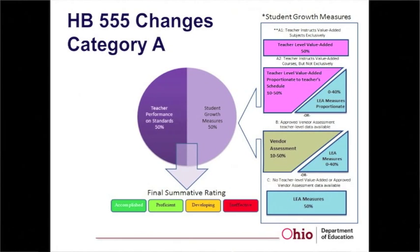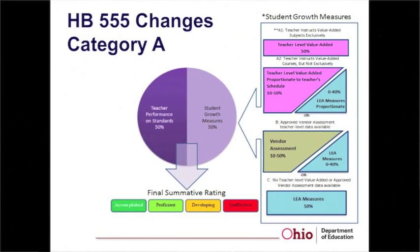Have you seen this slide before? The left side is that 50% teacher performance on the standards — formal evaluations and walkthroughs. The right side is what we're talking about today: that 50% student growth measures. Growth measures are broken down into three categories. Category A are teachers who instruct value-added courses — fourth through eighth grade reading and math. Category B are teachers who give an assessment on the approved vendor assessment list, posted on the ODE website and updated annually. Category C are teachers who have no teacher-level value-added or vendor assessment data, using SLOs and shared attribution.